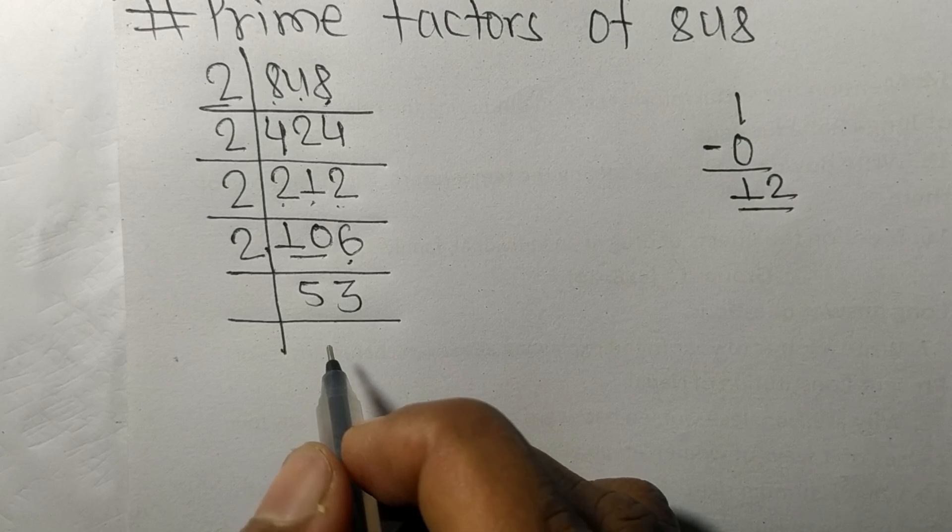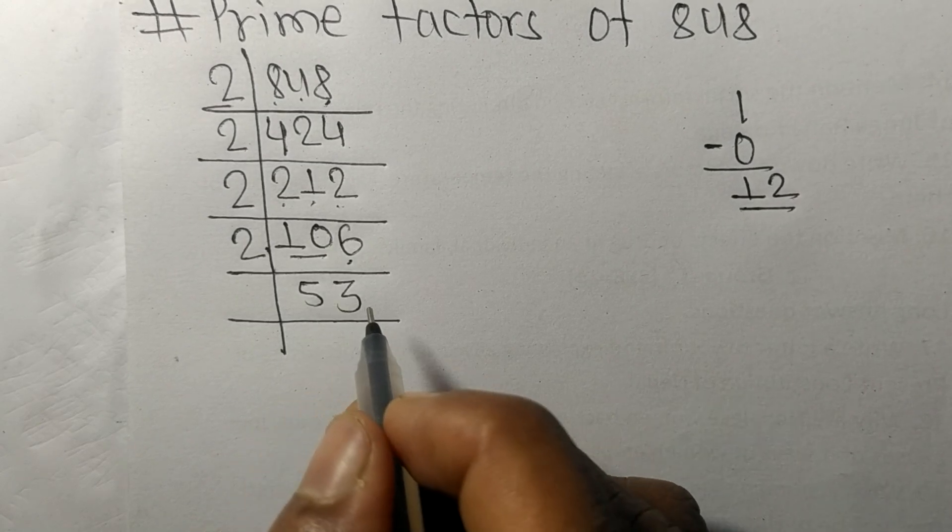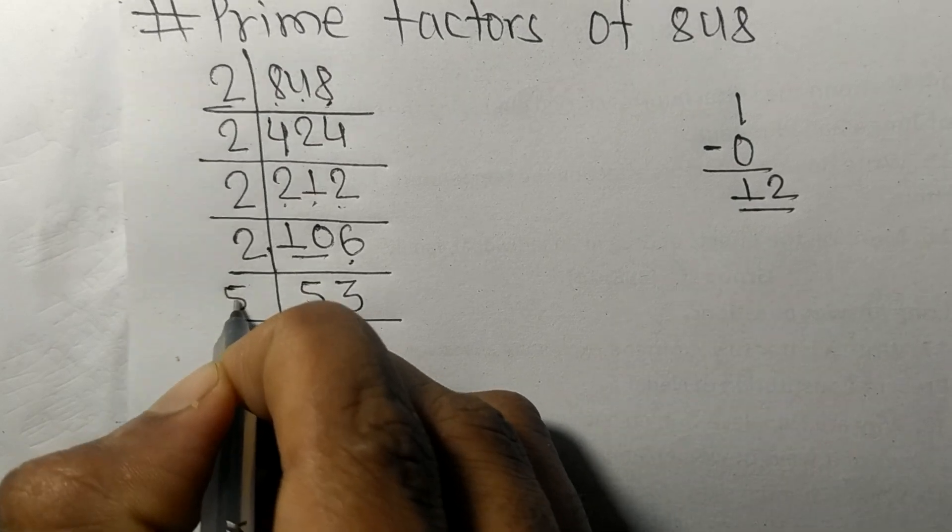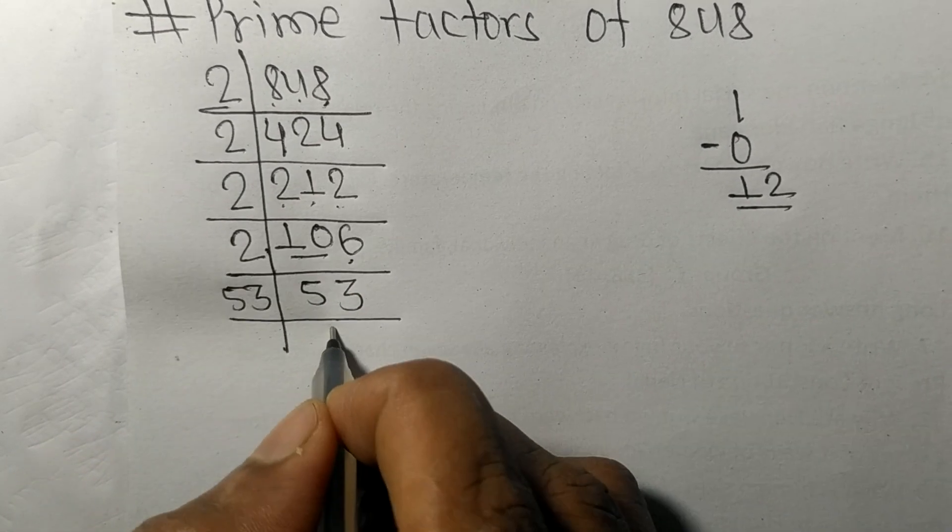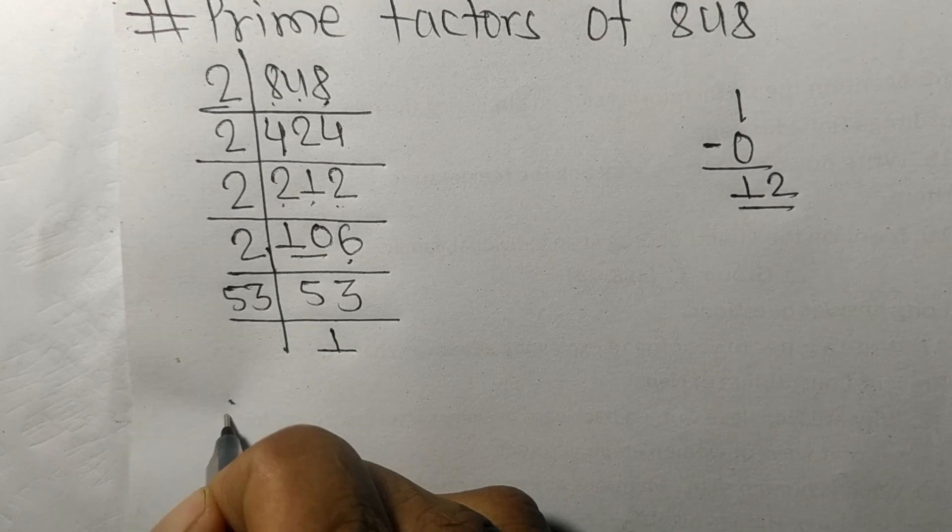53 is a prime number, so it is exactly divisible by 53 only. On dividing we get 1.